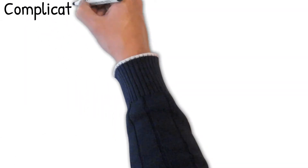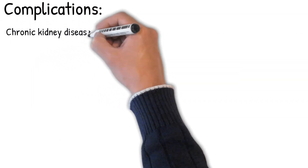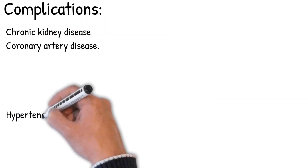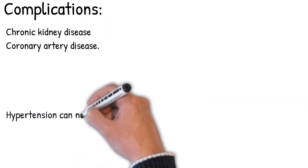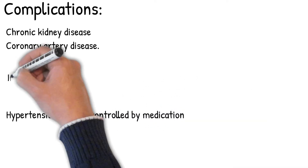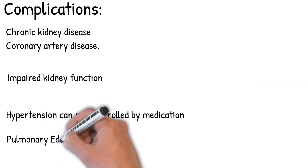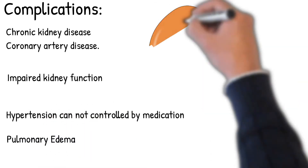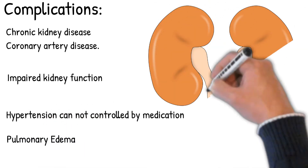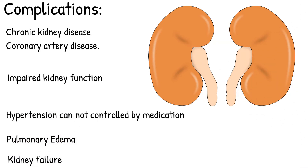Possible complications of renal artery stenosis are chronic kidney disease and coronary artery disease. Most cases of renal artery stenosis are asymptomatic. Symptoms include high blood pressure that cannot be controlled with medication, decreased kidney function, and pulmonary edema. If the stenosis is long-standing and severe, the glomerular filtration rate in the affected kidneys never recovers, and pre-renal kidney failure is the result.